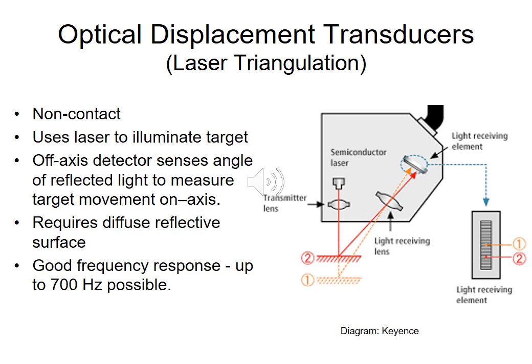This is a laser triangulation sensor which operates by sending a laser beam towards the target. As the target moves, the reflected laser beam is deviated as a result of the change of the incident point, and we use a photo detector or light-receiving element to capture the returned light, whose position is proportional to the motion of the surface.